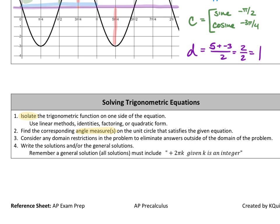You will then consider any domain restrictions, meaning if it says, please only answer between 0 and pi, make sure you don't give an answer that's bigger than pi or less than 0. And then if it asks you for the general solution or all solutions, that's what I've noticed they write it as, what are all solutions, this is where you write individual equations for each theta, making sure you add this plus 2 pi k given k is an integer.